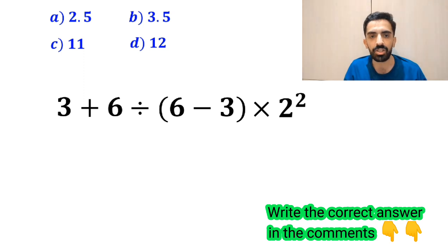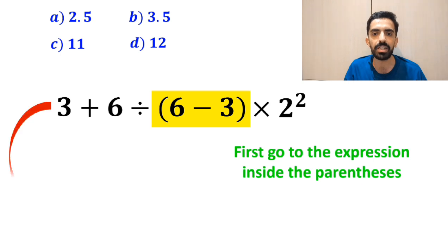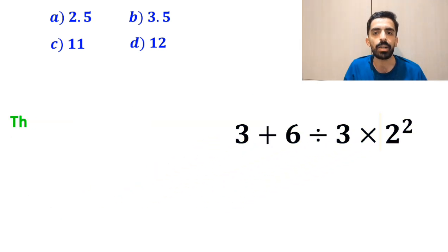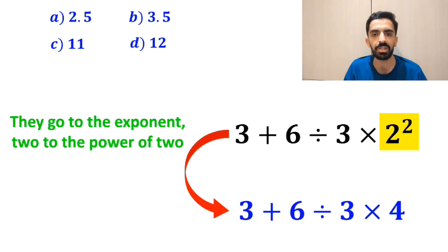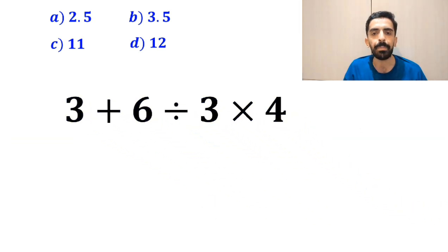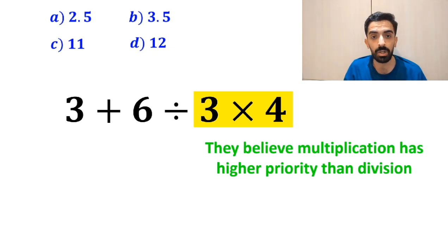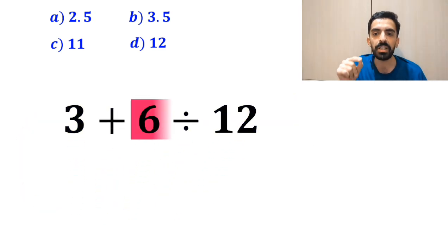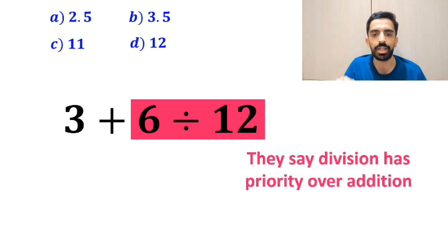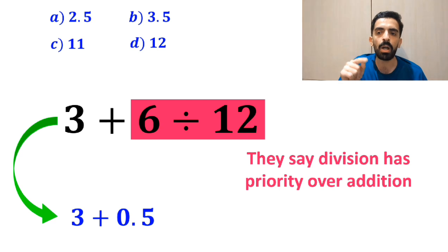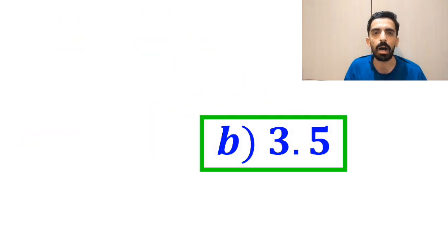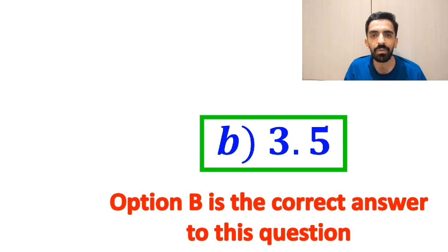Also, some other people, to solve this question, first go to the expression inside the parenthesis, and instead write 3 plus 6 divided by 3 times 2 to the power of 2. In the next step, they go to the exponent 2 to the power of 2 and simplify to 3 plus 6 divided by 3 times 4. Then they perform the multiplication between 3 and 4, believing multiplication has higher priority than division, writing 3 plus 6 divided by 12. They then perform the division between 6 and 12, simplifying to 3 plus 0.5, which equals 3.5. They conclude that option B is the correct answer — however, that's definitely wrong.